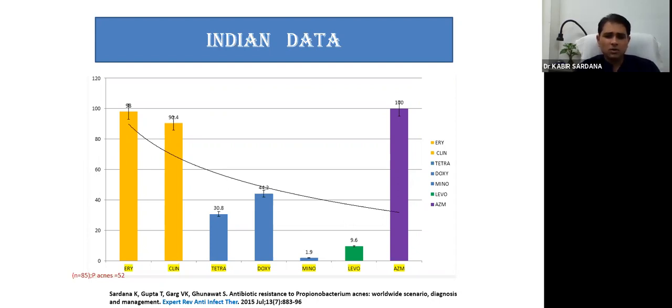Tetracycline and doxycycline resistance is much lower, minocycline is the lowest, and Levofloxacin is next. Erythromycin, a pet favorite of most of us, has one of the highest resistance in the world. 100% resistance is nowhere in the world except in Mexico. This gives you a glimpse on what you could ideally do.